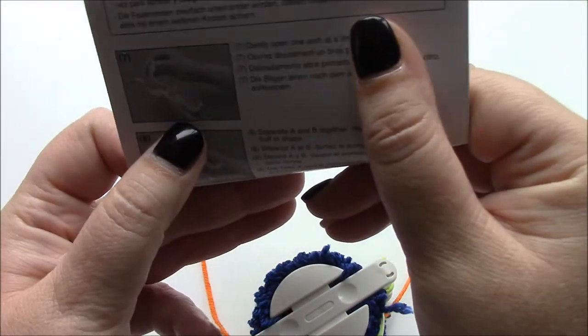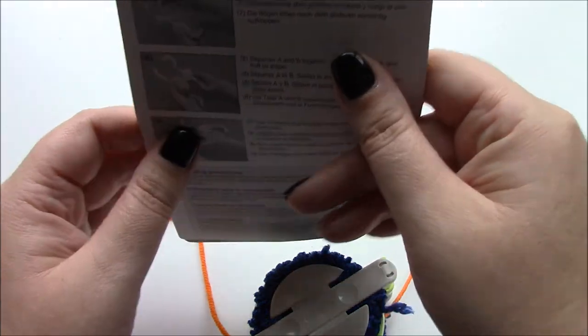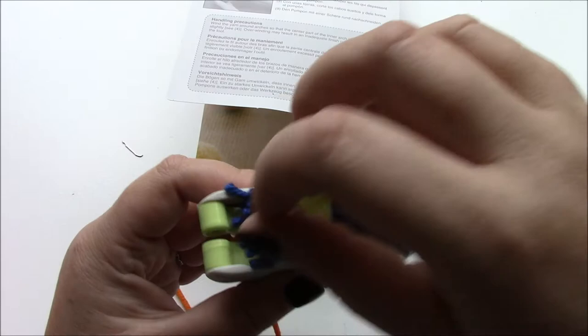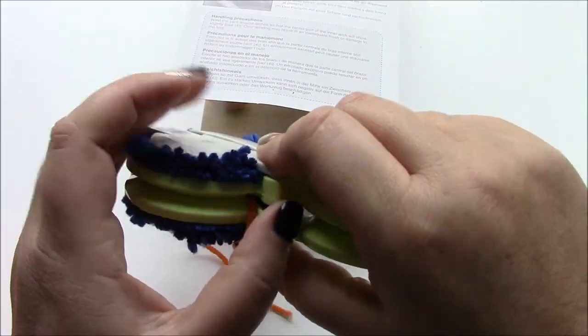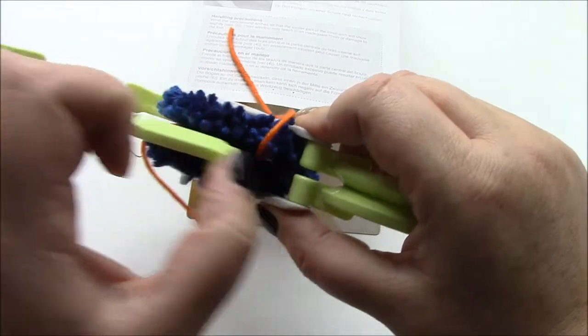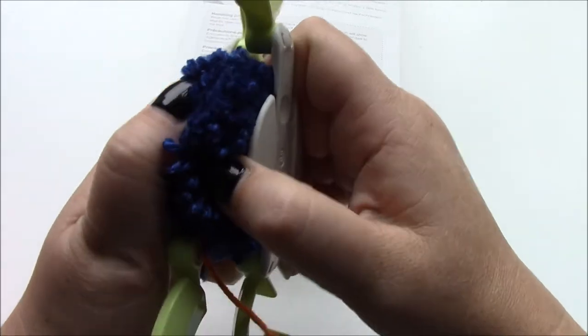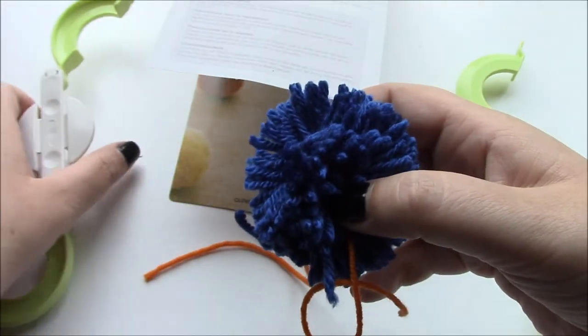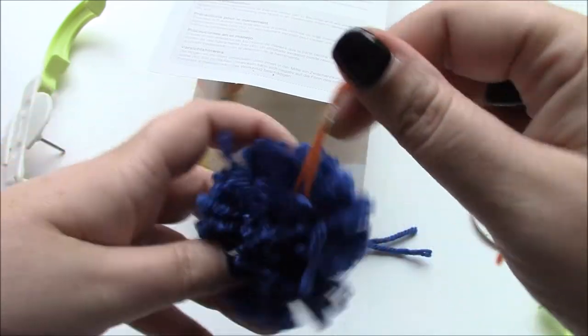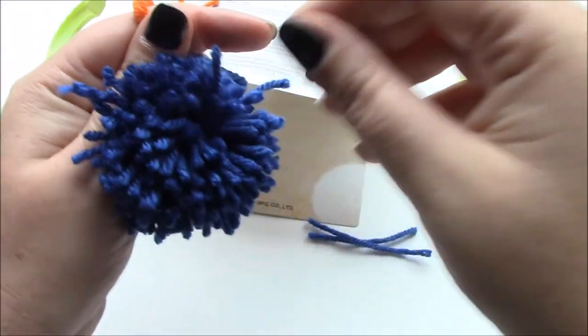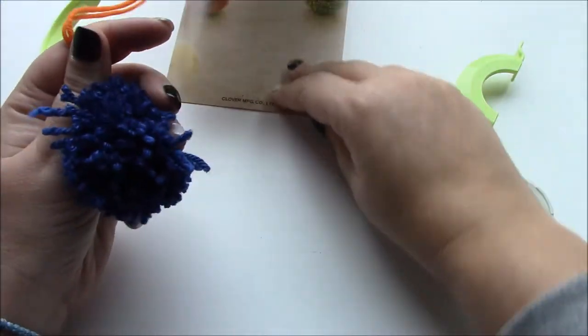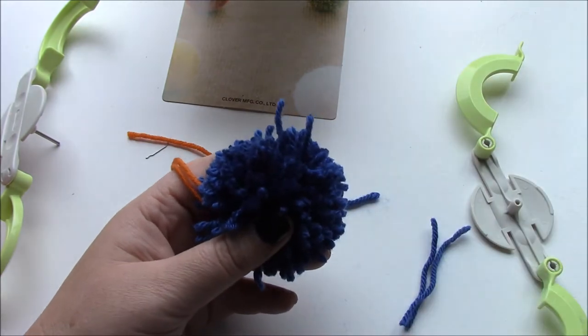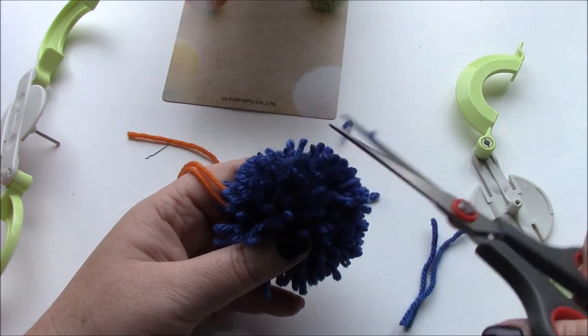Number seven, it looks like we're getting to the end of this. Number seven gently open one arch at a time and then I have to separate A and B. And then separate A and B. I haven't caught every single strand. I'm quite happy with that, it's going to need some tidying up and a bit of a haircut but I feel like those strands are in there nice and tight. So now if I was making a pom-pom in the normal way I'd give it a bit of adjusting making sure that it's all pulled out and nice and then I've just come along with a sharp pair of scissors and just give it a bit of a haircut and that's it.